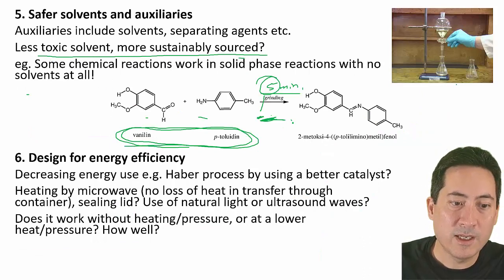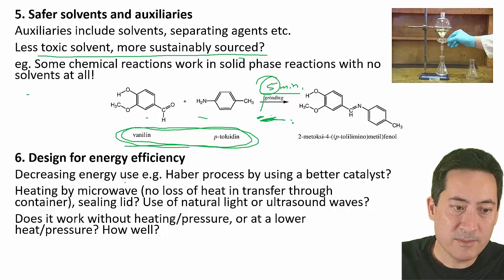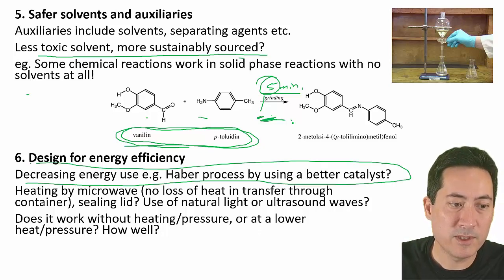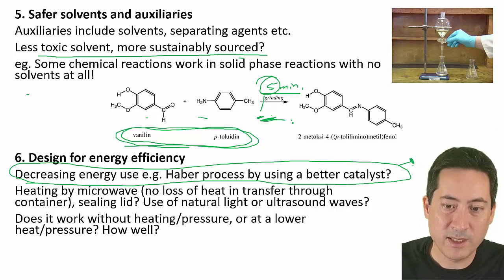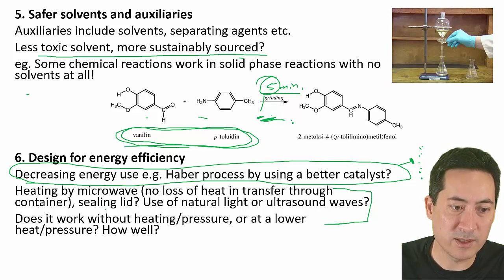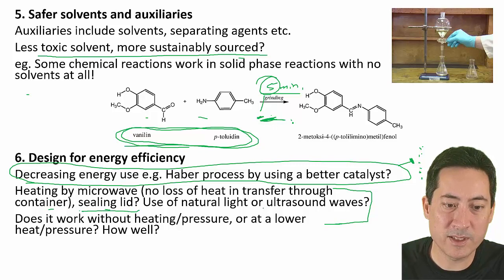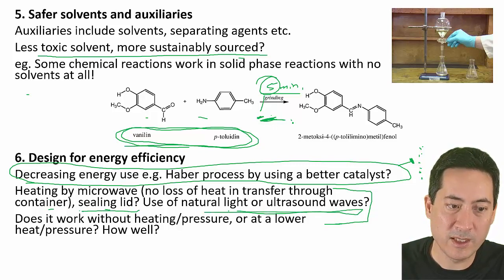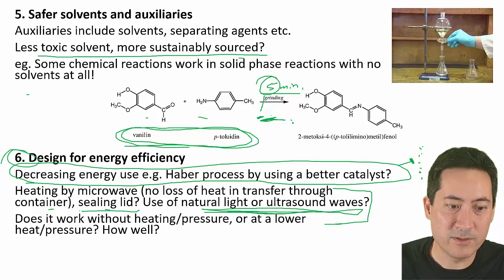Number six is energy efficiency — an endless source of research questions. You can look at a range of different catalysts or concentrations of catalysts, keeping the catalyst the same across five concentrations to find the ideal. More interesting approaches include microwave heating, which requires less energy and directly heats the material, sealing lids to heat faster, and using ultrasound waves to speed up reactions. You could also explore ranges of heat and pressure for different reactions.